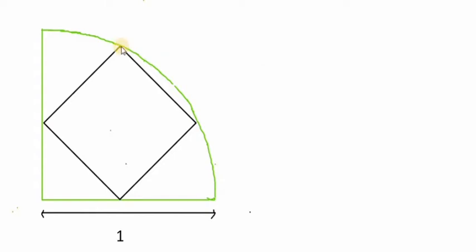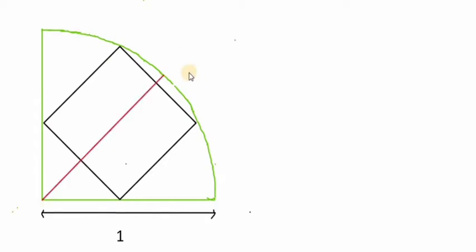Now let's solve this question. This side of the square is a chord of this circle, so if we draw a perpendicular bisector it will pass through the center of this circle. Now I have drawn this perpendicular bisector.